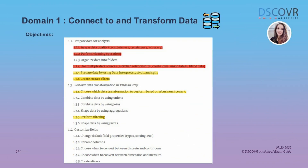Alright, so we're moving on to part 2 of domain 1. Some of the basic things you should already know for subsection 1.4 is how to change default field properties of dimensions and measures — things like changing the number format, aggregation, sorting, renaming columns, and creating aliases. You should also know how to perform a basic split on your columns and how to run the data interpreter.